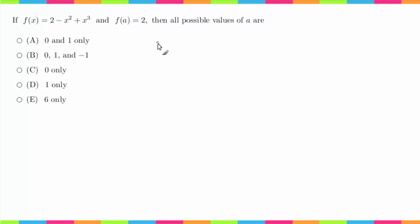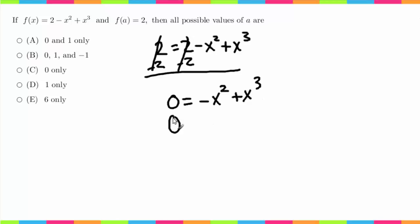So that becomes 2 = 2 - x² + x³. Subtracting 2 from both sides, I just get 0 here and here, so 0 = -x² + x³. I'm going to write this in standard form with that coming first.